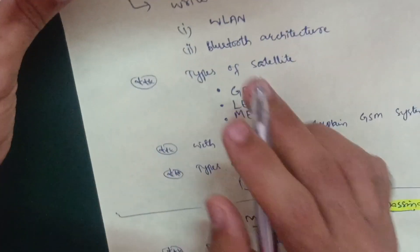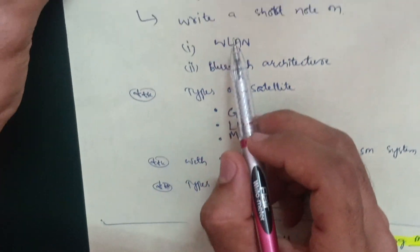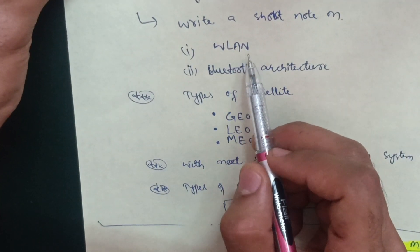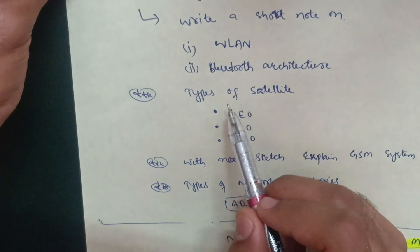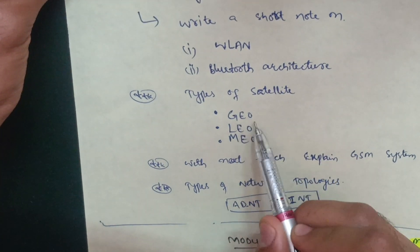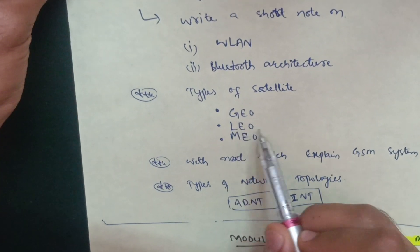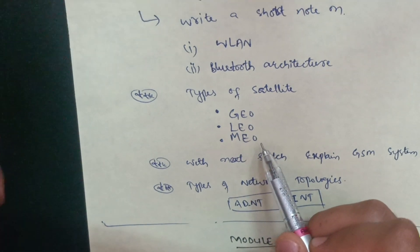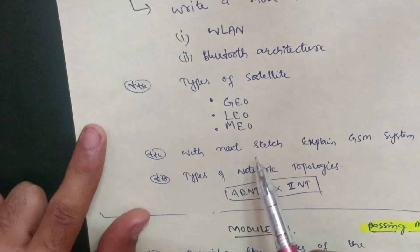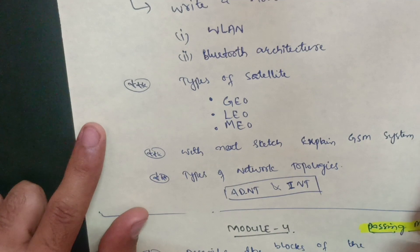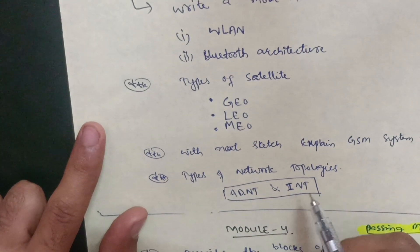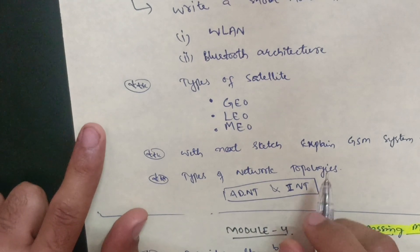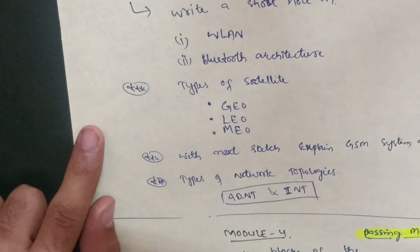The next important topic in Module 5 is the frequency-modulated microwave communication system. You also have to write short notes on WLAN and Bluetooth architecture. Cover types of satellites — GEO, LEO, and MEO. Then, with a neat sketch, explain the GSM system architecture and types of network topologies.